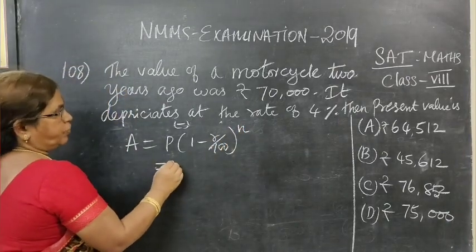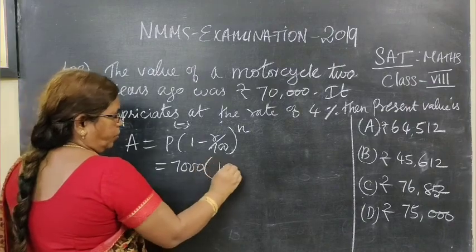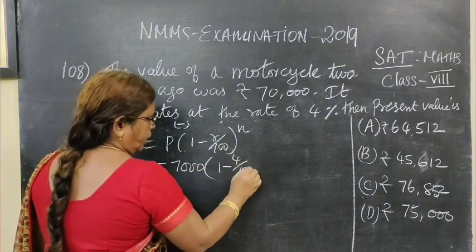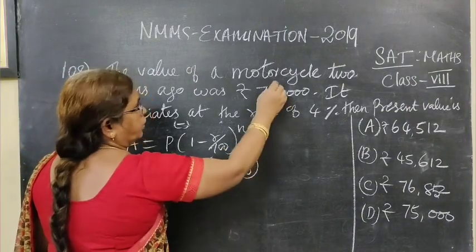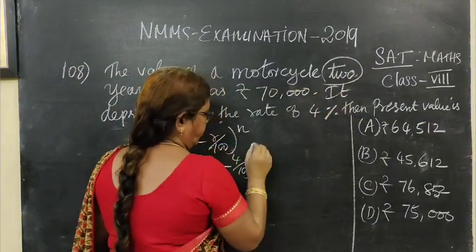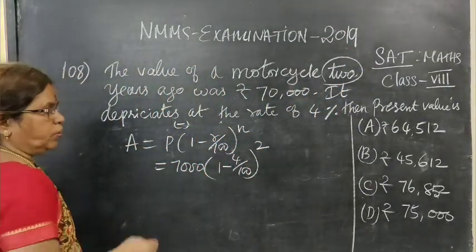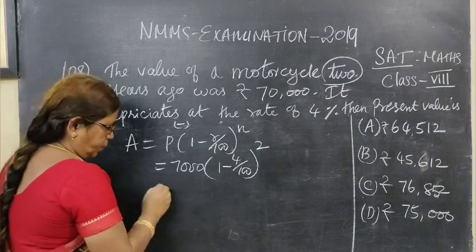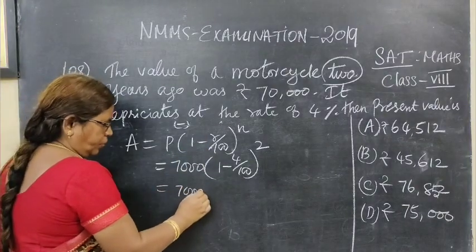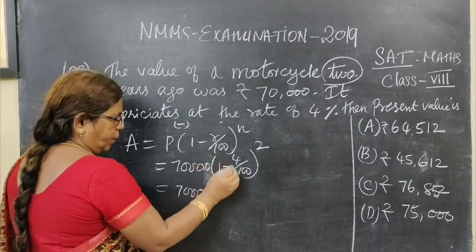So what is P value? 70,000. Then 1 minus R value 4 by 100. Two years ago the value — the N value is 2. Now let's see the option here. This is 70,000 bracket.